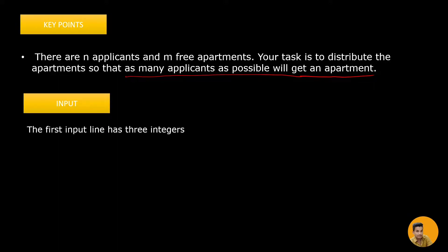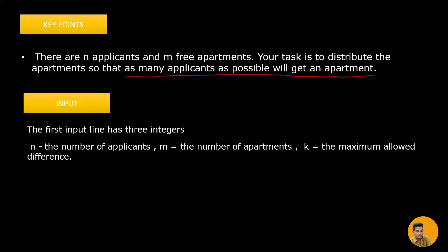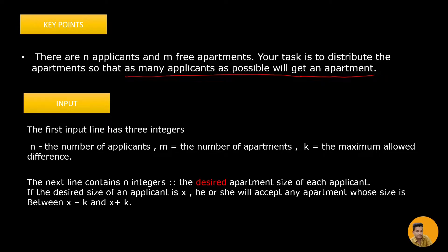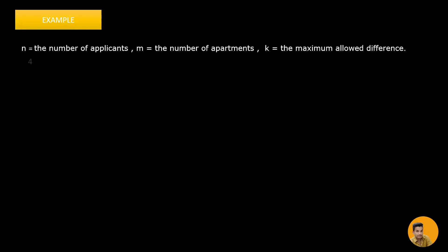The input contains three lines. The first line contains the number of applicants, the number of apartments, and the maximum allowed difference. As an example, let's say the number of applicants is four, the number of apartments is three, and the maximum allowed difference is five.